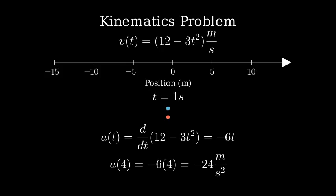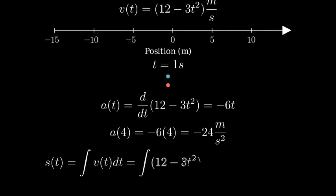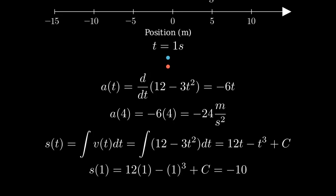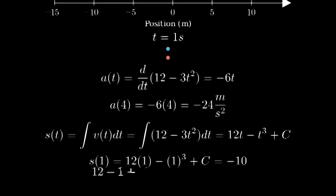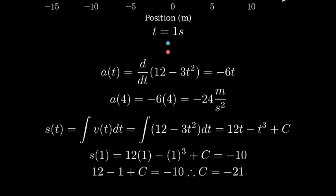Next, let's find the displacement from t equals 0 to t equals 10 seconds. To find position, we need to integrate velocity. The integral of 12 minus 3t squared dt equals 12t minus t cubed plus C. Using our initial condition that the particle is at negative 10 meters when t equals 1 second, we can solve for C. Plugging in these values, we get C equals negative 21.